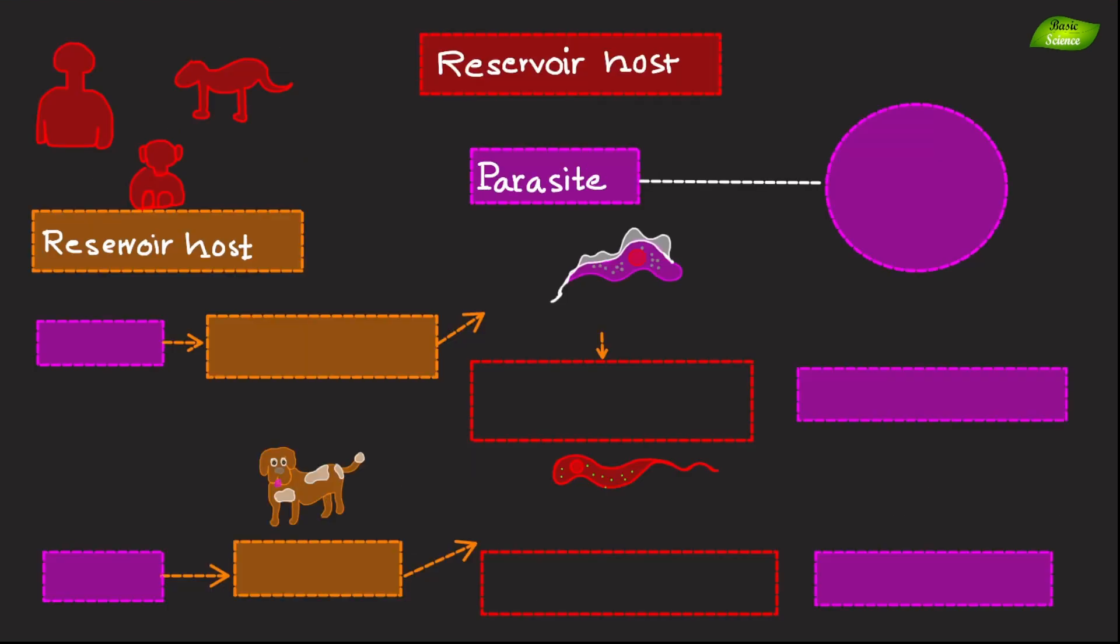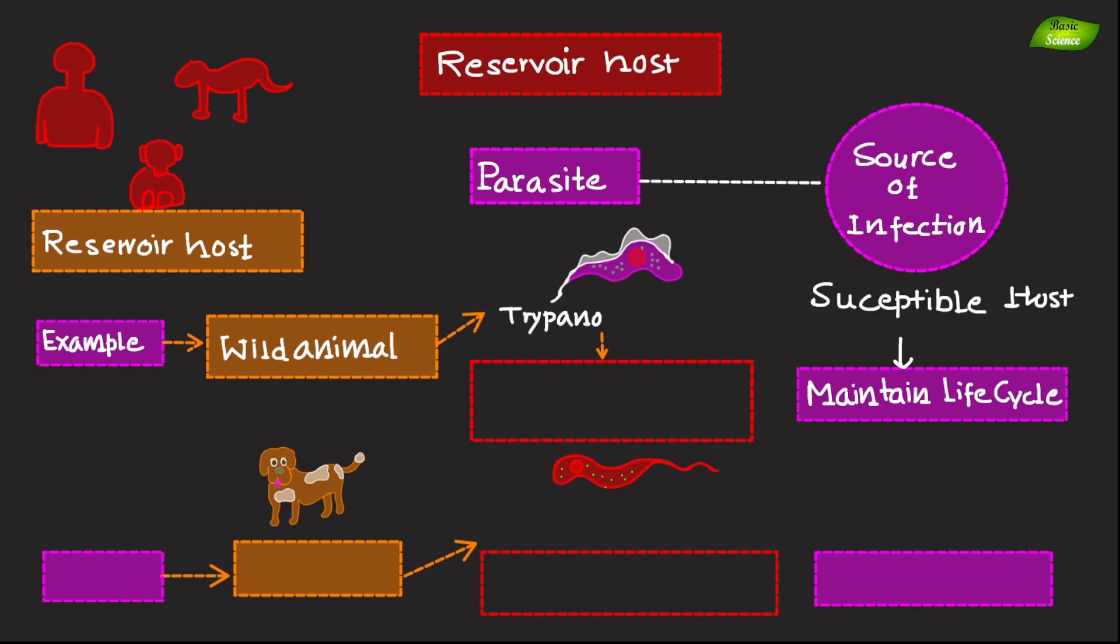Reservoir hosts harbor parasite and act as source of infection for other susceptible hosts. They can maintain the parasite's life cycle in the environment. Example is wild mammals for Trypanosoma cruzi. Various wild mammals act as reservoir hosts for Trypanosoma cruzi, the causative agent of Chagas disease, ensuring its persistence in nature. Another example is dogs for Leishmania species. Dogs are significant reservoir hosts for Leishmania species, which can cause Leishmaniasis, maintaining the parasite in endemic areas.